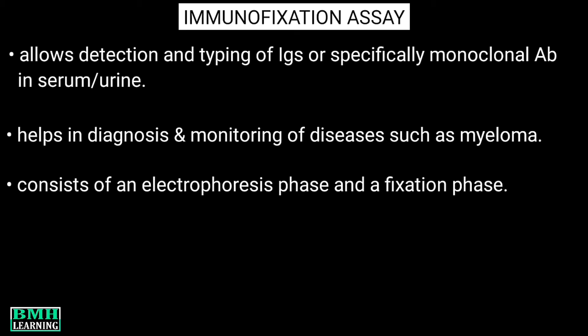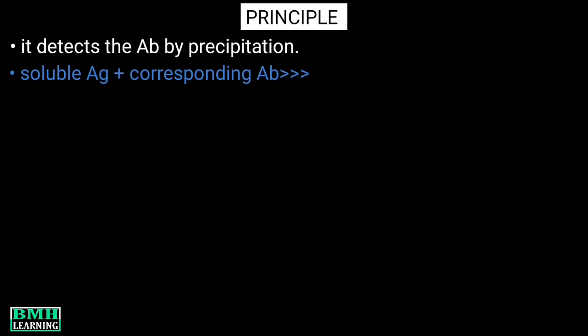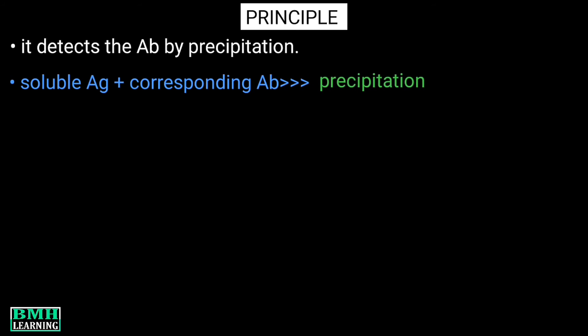The principle of immunofixation: the method detects antibodies by precipitation. When a specific soluble antigen is allowed to interact with the corresponding antibody, precipitation occurs. The precipitation may be visible to the naked eye or can be seen through a microscope.